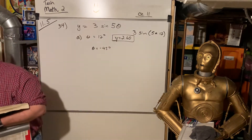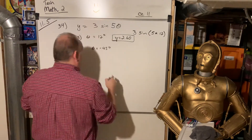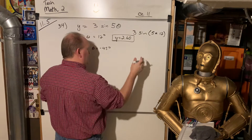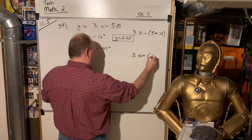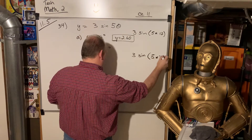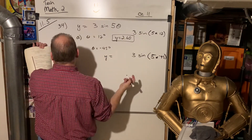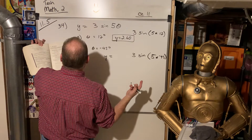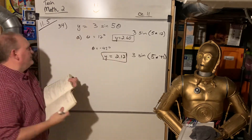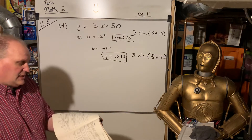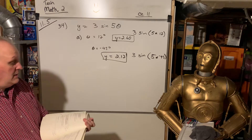The number in front of theta changes how many cycles there are. But they're not having us do that — they just want us to input this into the calculator. So 3 times the sine of 5 times negative 45 degrees, hit enter and round to two decimal places. That's 2.12.